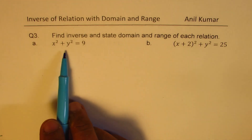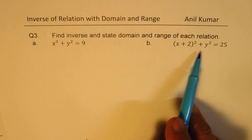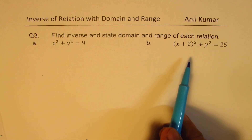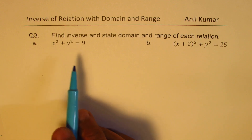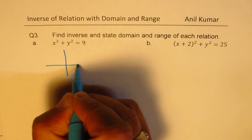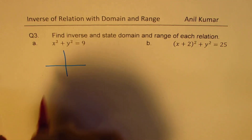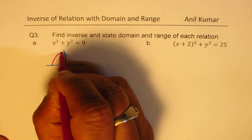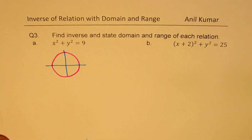Part A is x squared plus y squared equals to 9, and Part B is x plus 2 whole squared plus y squared equals to 25. There are four parts. Let's try to understand one by one. When we say x squared plus y squared equals to 9, we are talking about a circle with radius of 3 units.